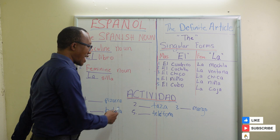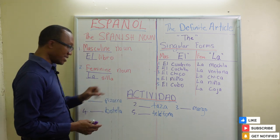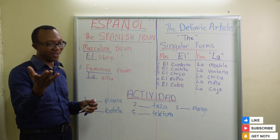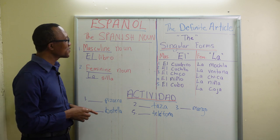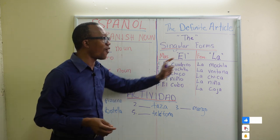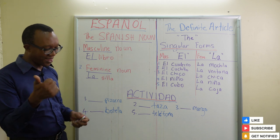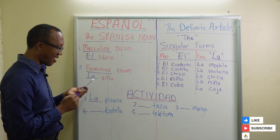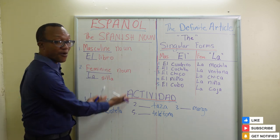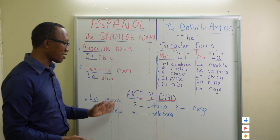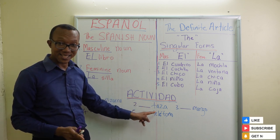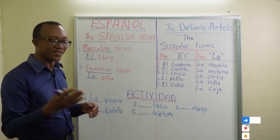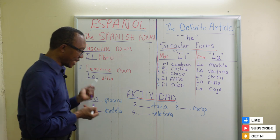Now let's do a quick activity. 'Actividad' — you might have worked that out. First: 'pizarra' — are you going to use 'el pizarra' or 'la pizarra'? Most of you said 'la,' and you are correct: la pizarra, meaning the board — the one I'm actually writing on right now. Number two: 'tasa' — is it 'el' or 'la'? You guessed correctly: la tasa, meaning cup.